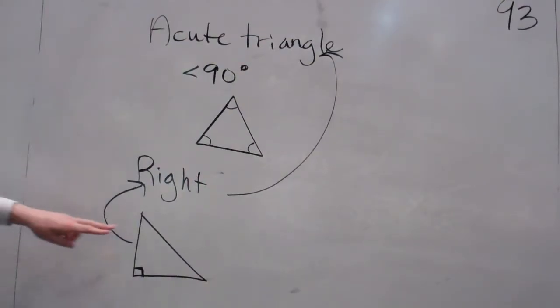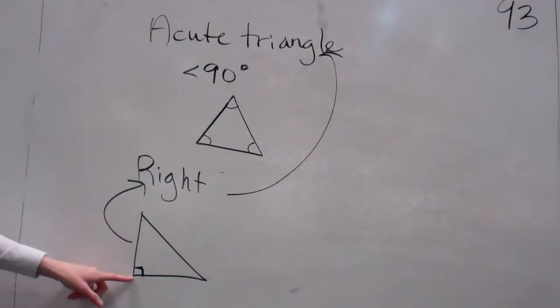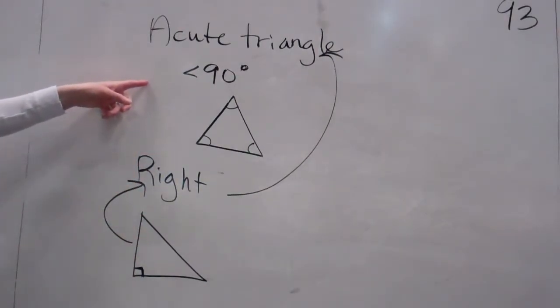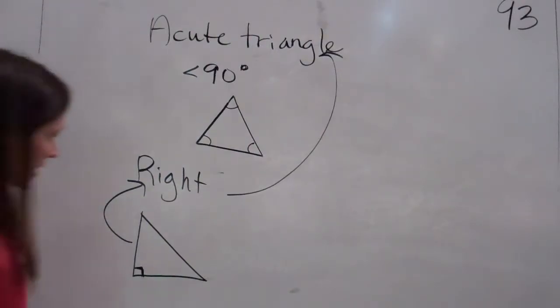Okay? What do you notice about the other two? They are acute. Okay? But they're not all three acute because this one is 90 degrees. And acutes are less than 90. Everybody understand that? Okay.